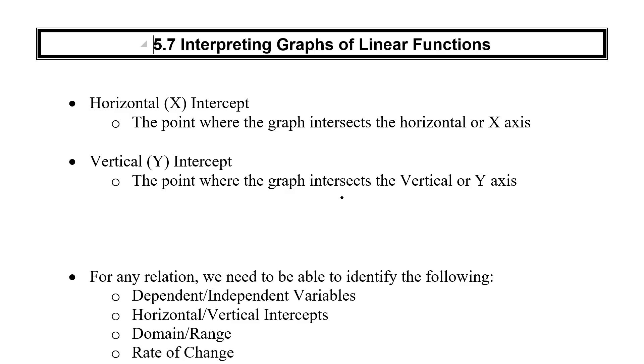And then we have our vertical intercept, the point where the graph intercepts the vertical, or y-axis. If our x is 0, what's our y value? So for the horizontal intercept we would have 0 and a number, and for the y-intercept we would have a number and 0.